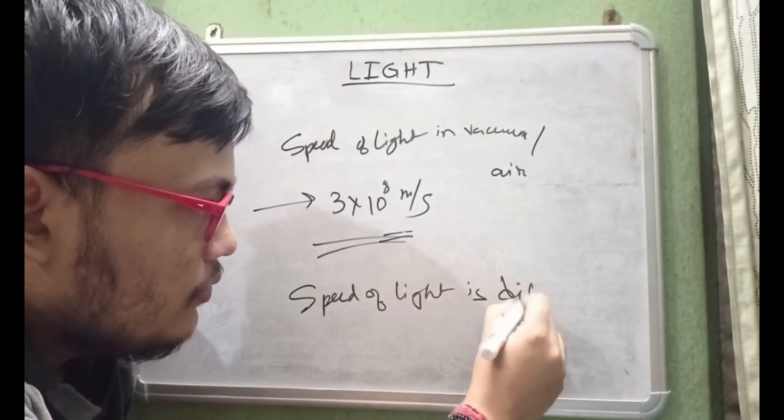Mediums where the speed of light is more are called optically rarer mediums, and mediums where the speed of light is less are called optically denser mediums. Where the density of the medium is greater, the speed will be less — those are optically denser. Where the density is low, the speed of light will be more — those are optically rarer.